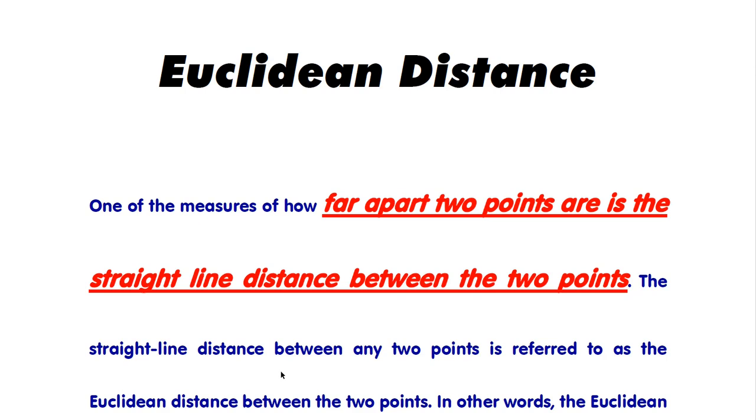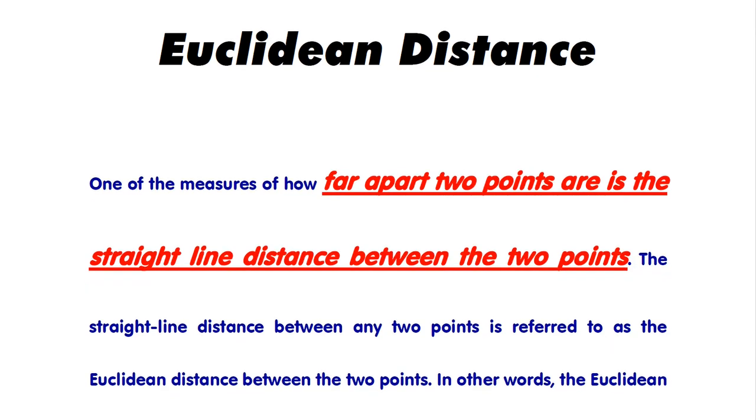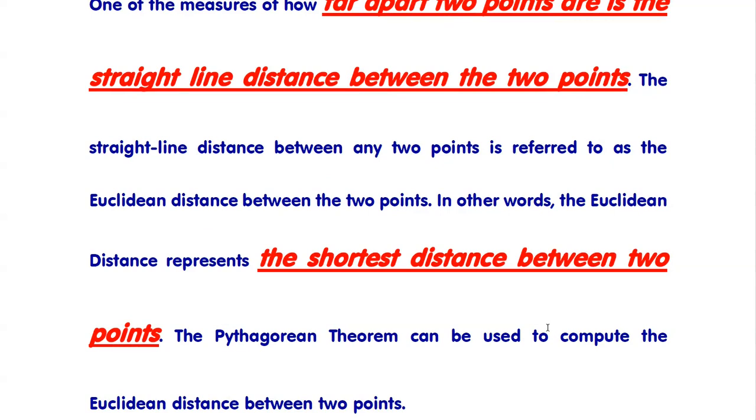If we have two points A and B and we find their distance, we can find the distance of two points with the help of Euclidean distance. In other words, Euclidean distance represents the shortest distance between two points.